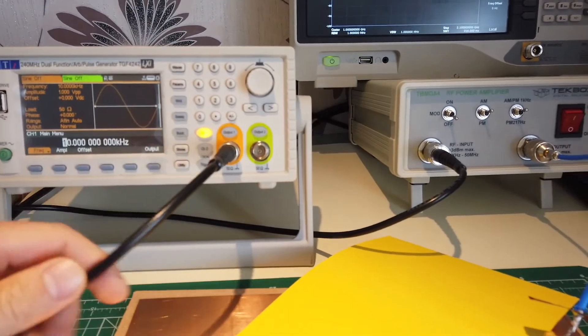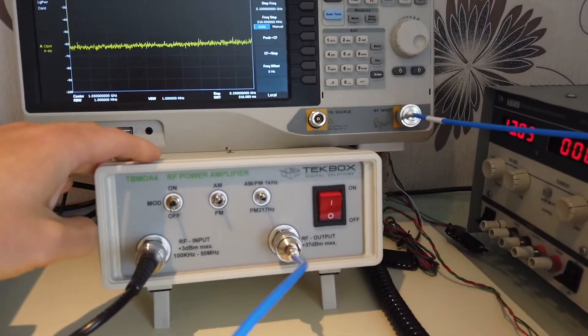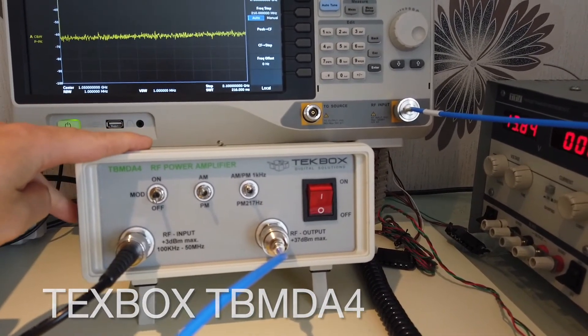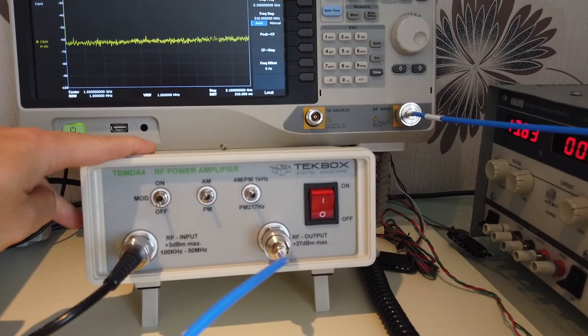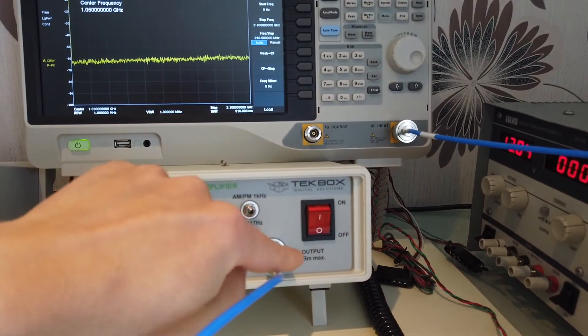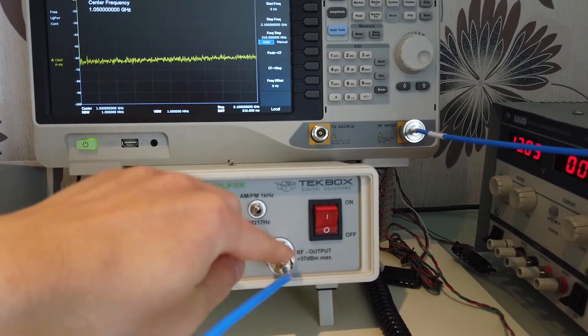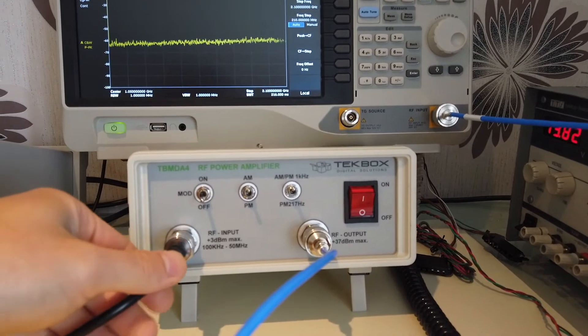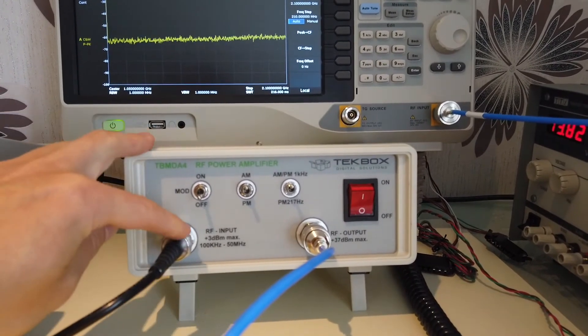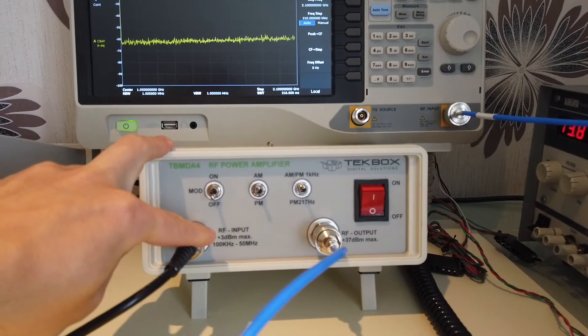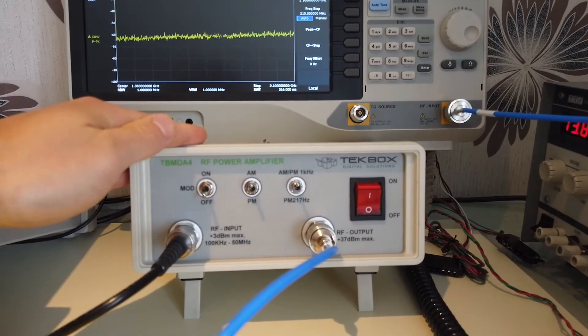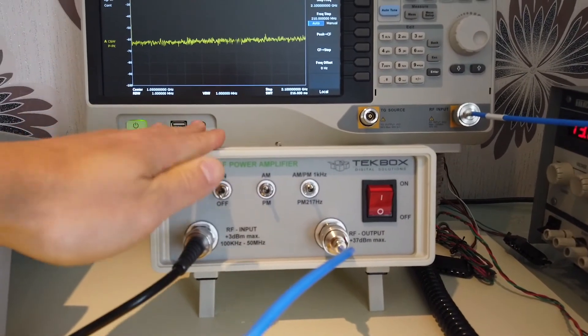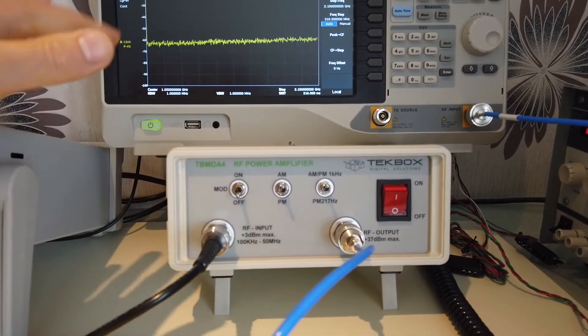And the output of the signal generator is going to be connected to the RF power amplifier. For the RF power amplifier, I'm using TechBox TBMDA4. It has 37 dBm output. Very, very powerful. The inputs, you have to protect it as always. So it never exceeds the 3 dBm maximum limit. This module has a frequency range between 100 kHz to 50 MHz, which is ideal for this case.